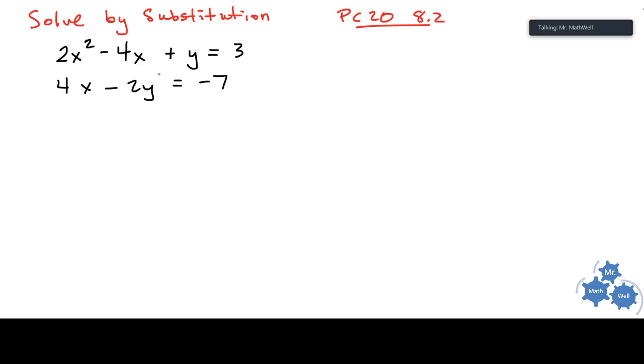This right here is a system of equations and we have a system meaning there's more than one equation and we're trying to solve for what are the missing values for x and for y. Now, this is a quadratic, so this is going to be some kind of parabola. This one over here is linear, so this is going to be some kind of straight line. So we could have zero solutions, we could have one solution, we could have two solutions. We know that at the beginning.